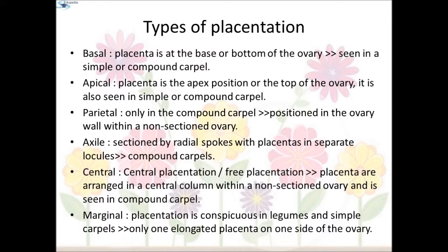Basal placentation: the placenta is at the base or bottom of the ovary; seen in simple or compound carpels. Apical placentation: the placenta is at the apex or top of the ovary; also seen in simple or compound carpels. Parietal placentation: found only in compound carpels; the ovules are positioned on the ovary wall within a non-sectioned ovary. Axial placentation: the ovary is sectioned by radial septa with placentas in separate locules; seen in compound carpels. Central placentation: also known as free central placentation; placentas are arranged in a central column within a non-sectioned ovary; seen in compound carpels. Marginal placentation: conspicuous in legumes and simple carpels; there is only one elongated placenta on one side of the ovary.